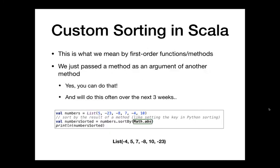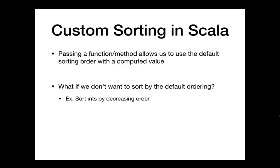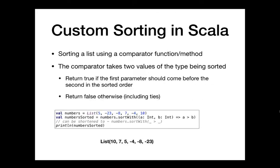What if we don't want to use the default ordering? We can specify what to sort by. But what if we want completely custom sorting? For that, we're going to use `sortWith` in Scala. `sortWith` is going to take a function that takes two values of the input type and returns a boolean — returning true if the first input comes before the second one and false otherwise.